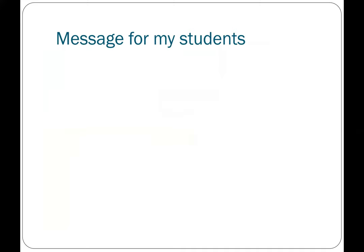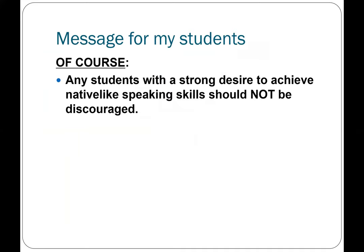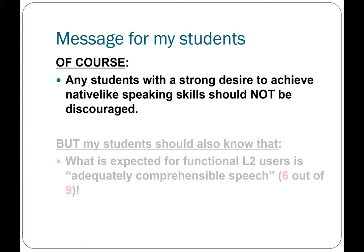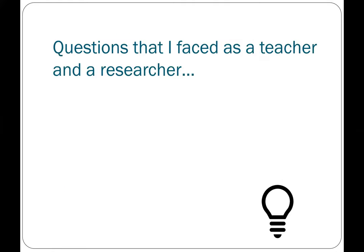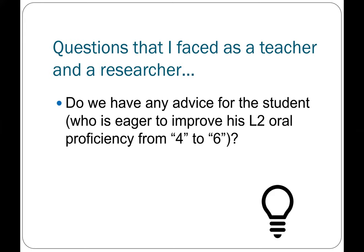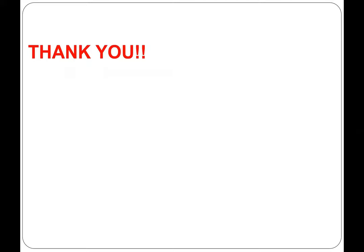My pedagogical message is that students with a strong desire to achieve native-like speaking skills should not be discouraged. But it's very important for all students to know that what is actually expected and realistic for functional second language users is adequate and comprehensible speech, not native-like speech. So we now know that adult second language speech learning is a transition from relatively difficult to understand to adequately easy to understand. If students are currently at 4 and want to become more intelligible and functional at 6, what kind of instruction can we provide? What would be the most efficient way to help them reach that goal?